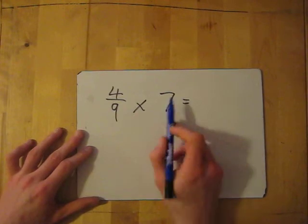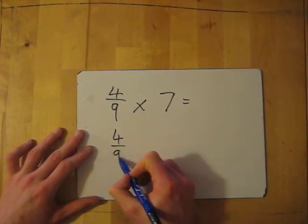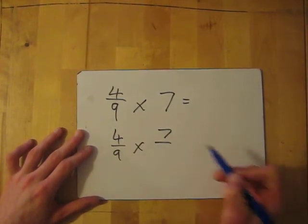Let's try another one. 4/9 times 7. So we're going to turn this into a fraction, so we'll have 4/9 times 7 over 1.